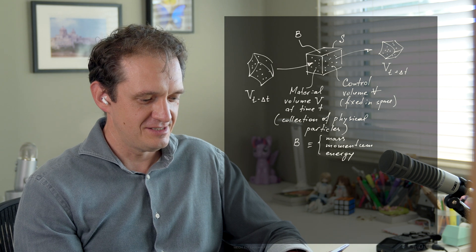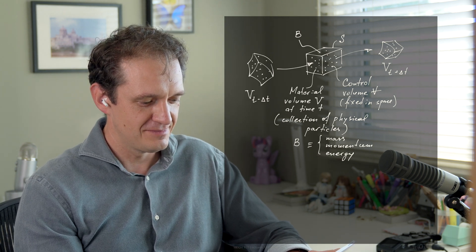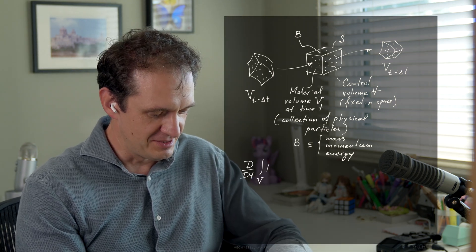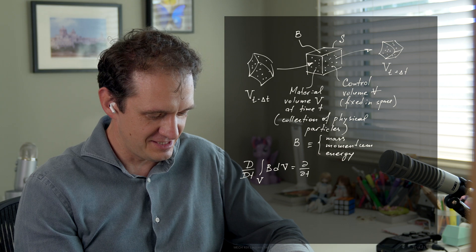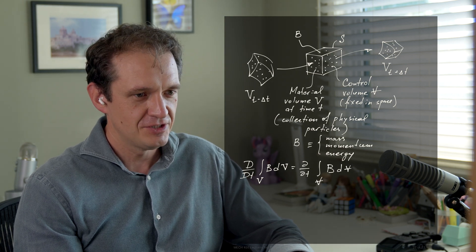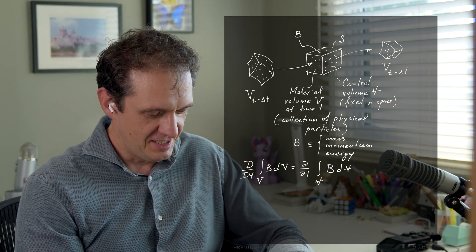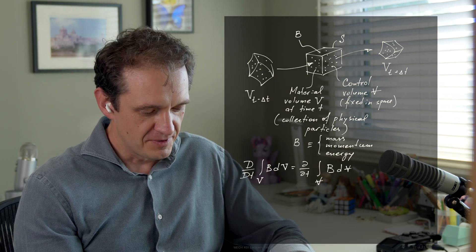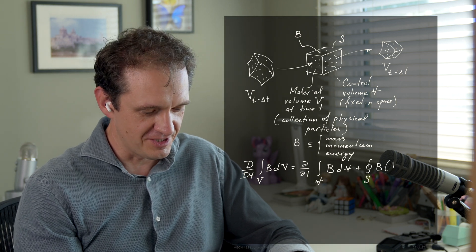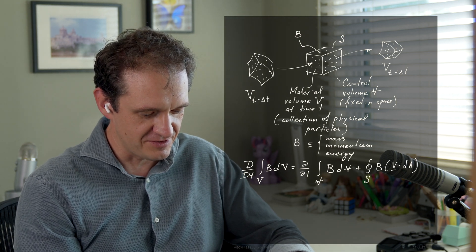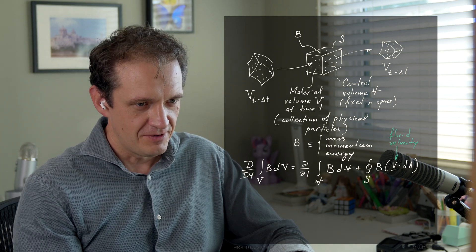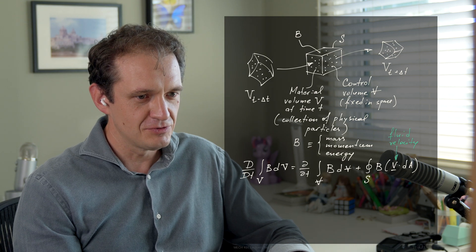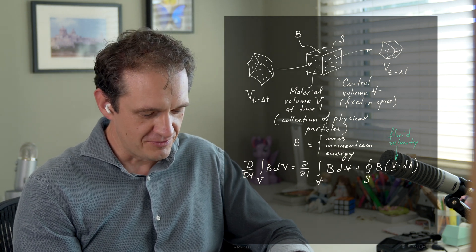If we consider now the change that's happening to the material volume, we can relate it to the change that's happening to the control volume. Change of this property B over the material volume equals the change that happens locally, change with respect to time in the control volume V, plus the flux through the surface of the control volume. So this is the surface integral over S of that property B that's brought into or out of the volume by